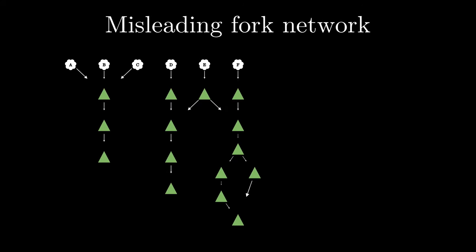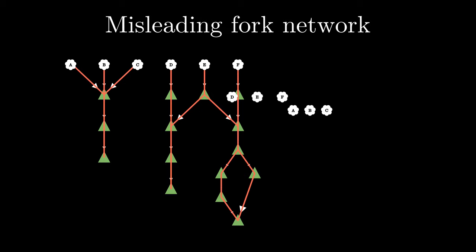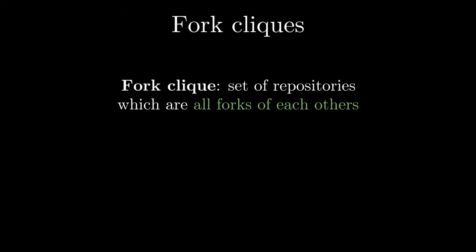Our intuition for why this happens is this: fork networks group together repositories that are only linked by transitivity, not because they are forks of each other. For example, D, E, and F may be grouped in the same network even though D and F do not contain any shared commits. This can happen when merging two repositories with unrelated histories, or when using advanced Git features like Git subtrees. In the article, we explore in more detail the aggregation process in these giant components with statistical tools. What we need instead is a way to group clusters of repositories that all happen to be forks of each other — we call them fork cliques.